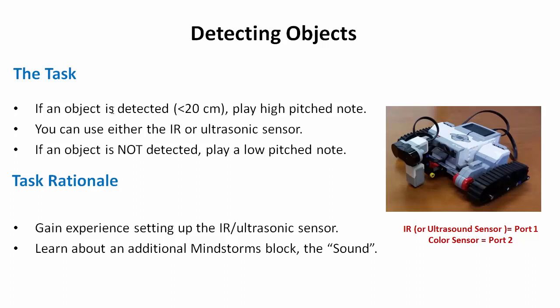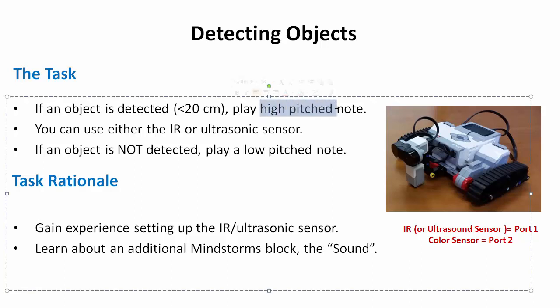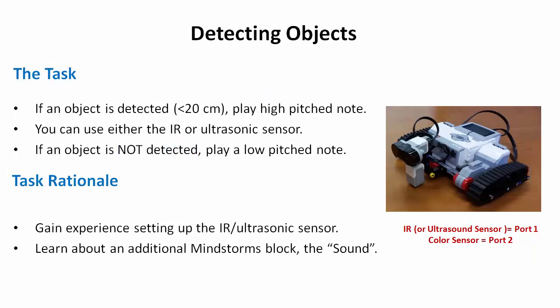We want to put an object in front of the tracker and see how we can use the IR sensor to detect it. We're going to use the IR sensor as a true/false reading and program it to have a threshold — if an object is less than a certain distance away, we want to do something. We're going to play a high-pitched note when detected and a low-pitched note when not. We'll also gain experience with the sound block, which we'll use throughout the rest of the course.